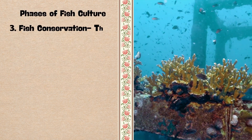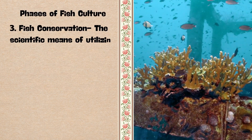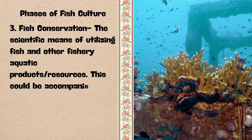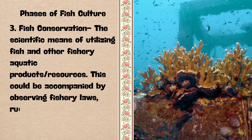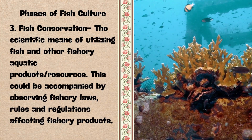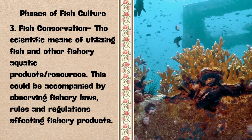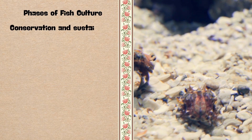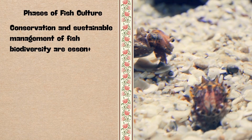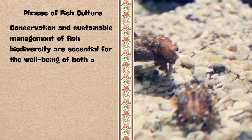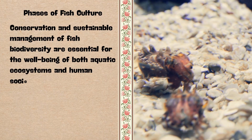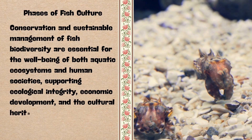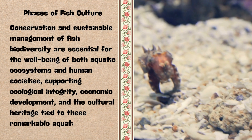3. Fish Conservation — the scientific means of utilizing fish and other fishery aquatic resources. This can be accomplished by observing fishery laws, rules and regulations affecting fishery products. Conservation and sustainable management of fish biodiversity are essential for the well-being of both aquatic ecosystems and human societies, supporting ecological integrity, economic development, and the cultural heritage tied to these remarkable aquatic creatures.